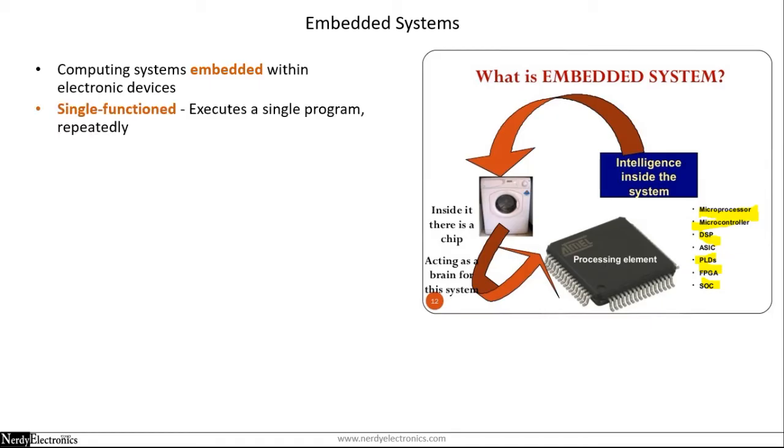Embedded Systems are single function which means they execute a single program repeatedly. This is the primary difference between an Embedded System and a general purpose computer. A general purpose computer will enable the user to load any program and start using it. But for an Embedded System, there is one fixed program and that program keeps running in a loop.